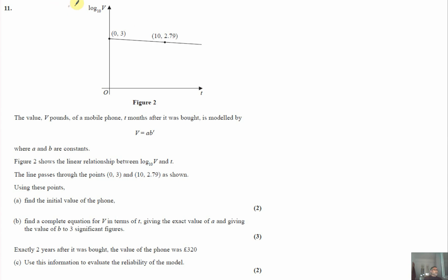Okay, question 11 in the June 2023 Paper 1 Edexcel exam series for A-level. We're looking at a logarithms question where we've got the value V pounds of a mobile phone t months after it was bought. It's modeled by V equals a b to the t. We don't know what a and b are just yet.